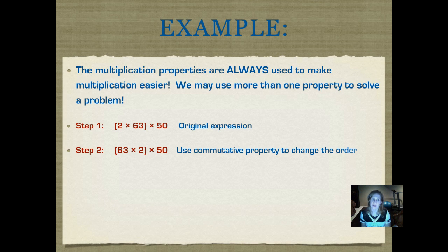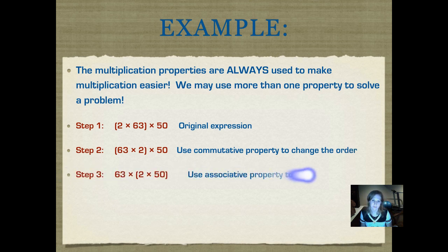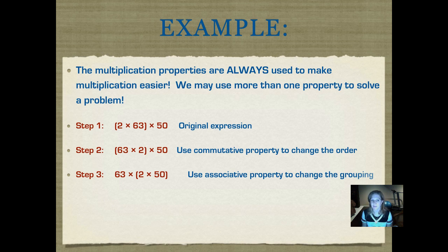Use the commutative property — move those numbers around. Notice in step 1, the order of the numbers is 2 times 63 times 50. In step 2, the order of the numbers is 63 times 2 times 50. I moved them around because I want to make it easier to multiply. Now I'm going to use the associative property to change the grouping of my factors. So instead of having the parentheses around 63 times 2, I've made my parentheses around the 2 times 50, because 2 times 50 is 100, and it's easy to multiply 63 times a multiple of 100.